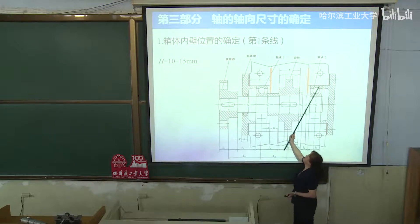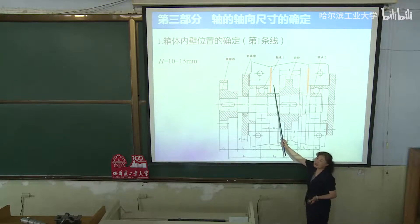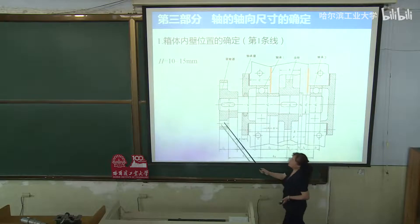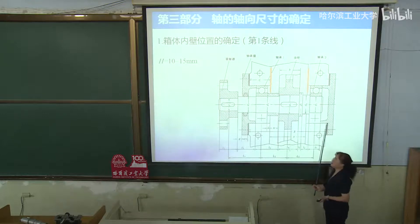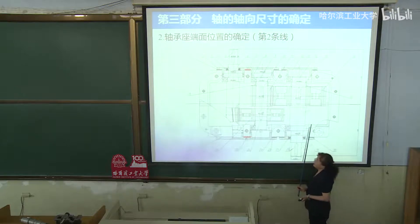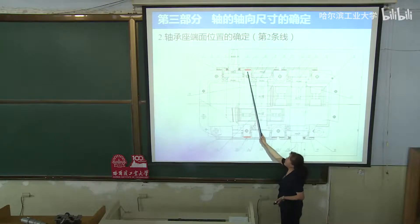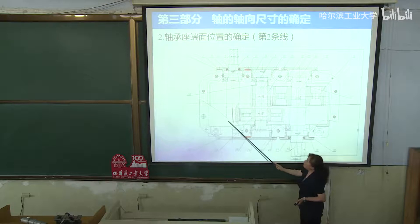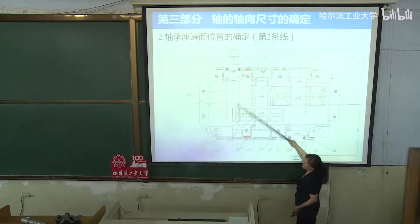内壁线距最宽处的距离H是运动件（齿轮）和不动件（机体）之间的间隙。齿轮运动不能和不动的机体相碰，运动件和不动件之间要留距离H，通常留10到15毫米。这样确定了第一条线——箱体内壁线。